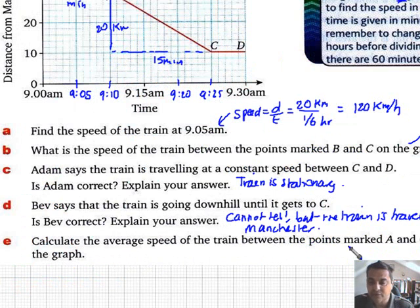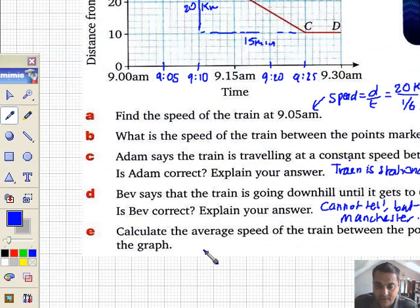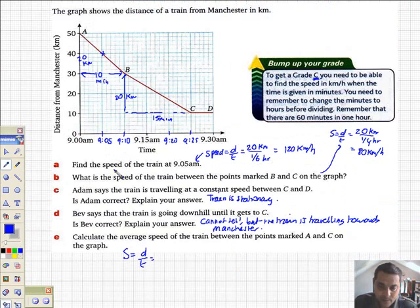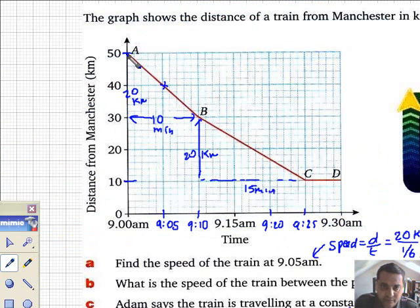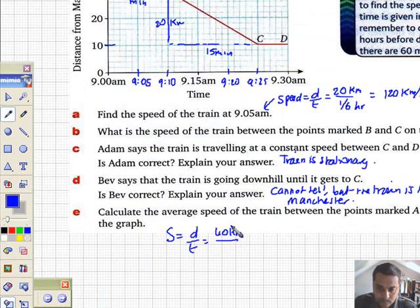Calculate the average speed of the train between points A and C. From that point to that point, how long have we got here? Speed equals distance divided by time. What is the distance between A and C? I've got from 50 away down to 10 away. I've basically gone 40 kilometers.